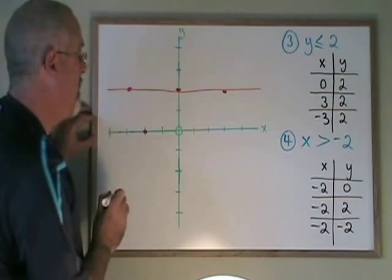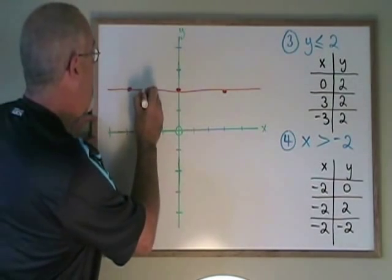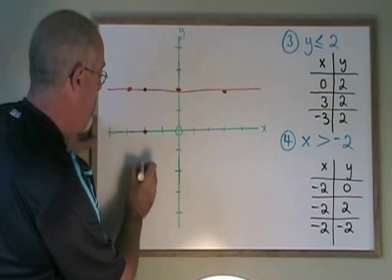Negative 2, 0 is here. Negative 2, 2 is here. And negative 2, negative 2 is here.